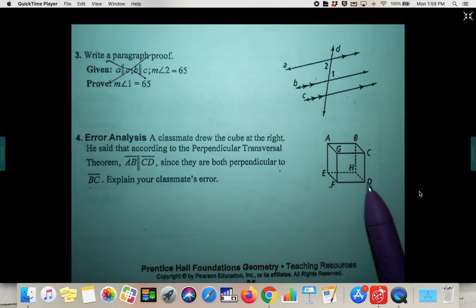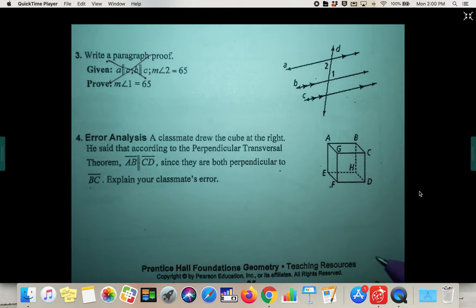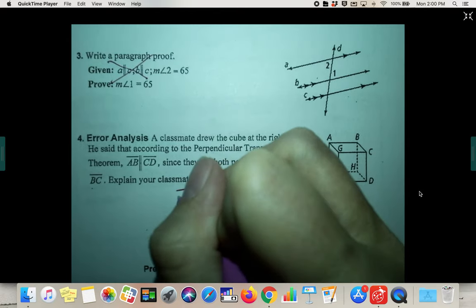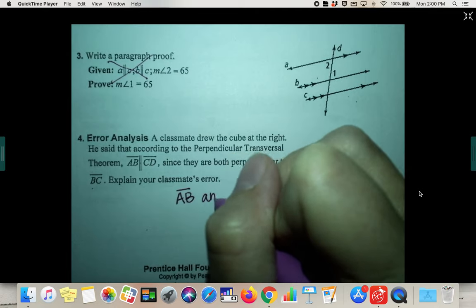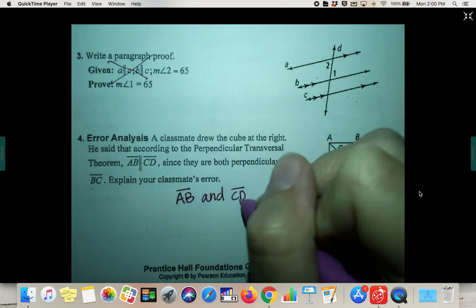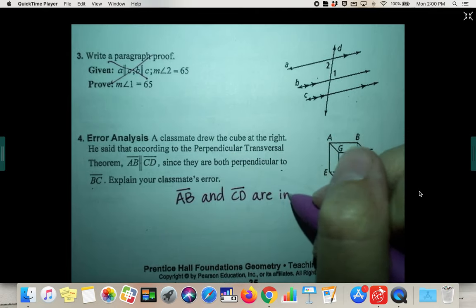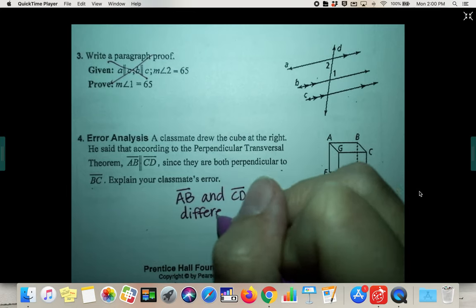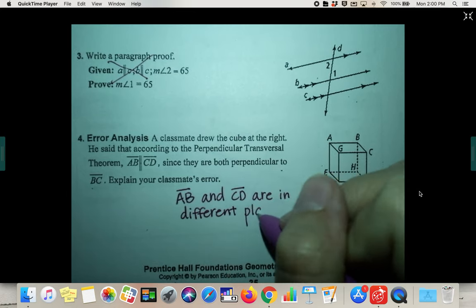since they are both perpendicular to BC. So yes, these are perpendicular. And yes, these are perpendicular. But based on the perpendicular transversal theorem, why is this not then parallel to this? And the answer is because theorem 3.9 states that lines to be parallel must be in the same plane. So segment AB and segment CD are in different planes.